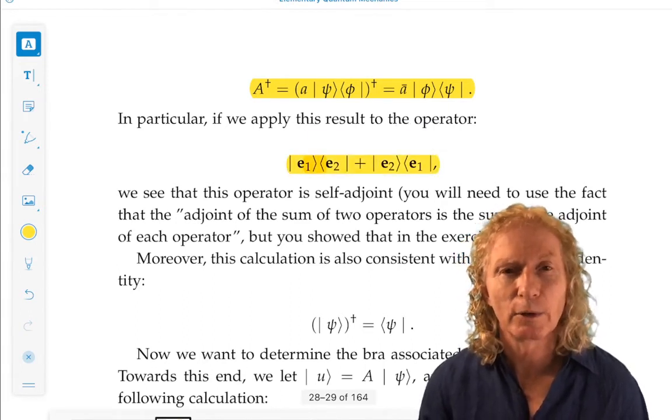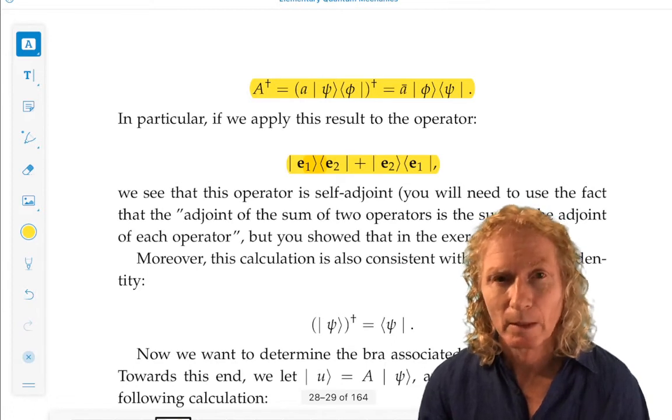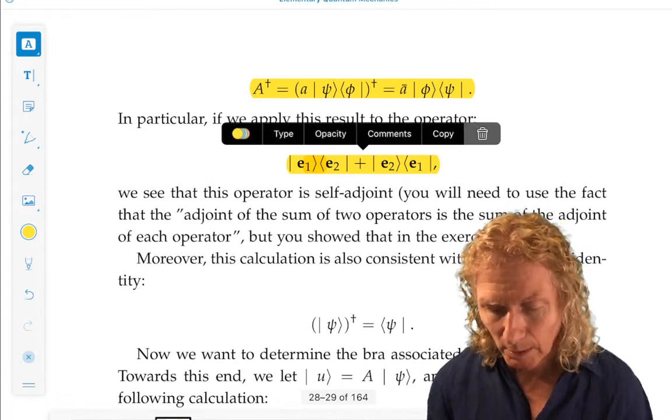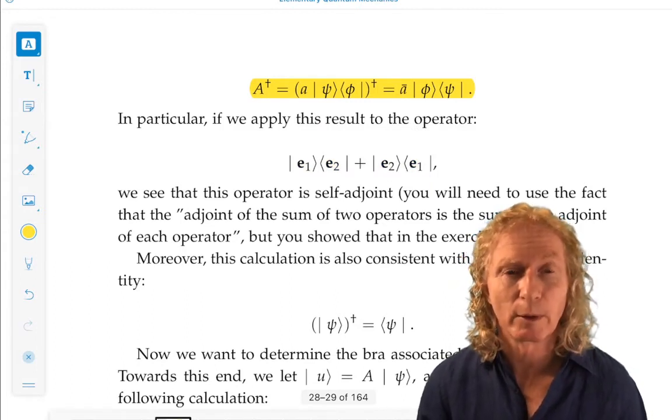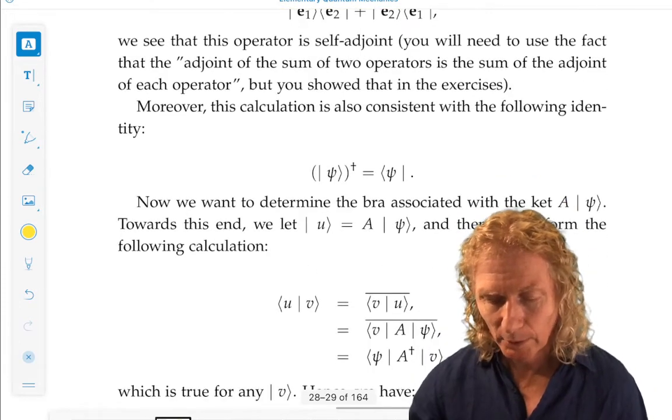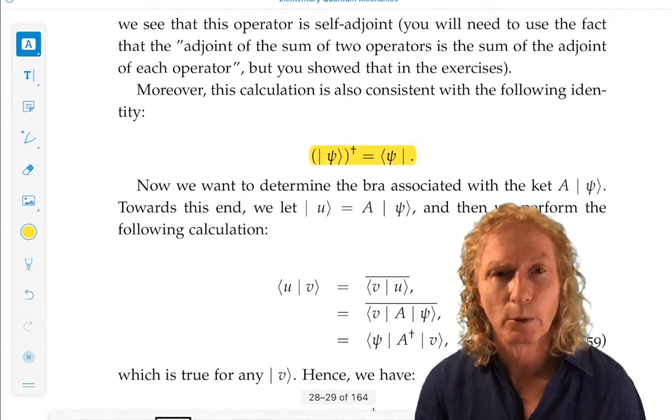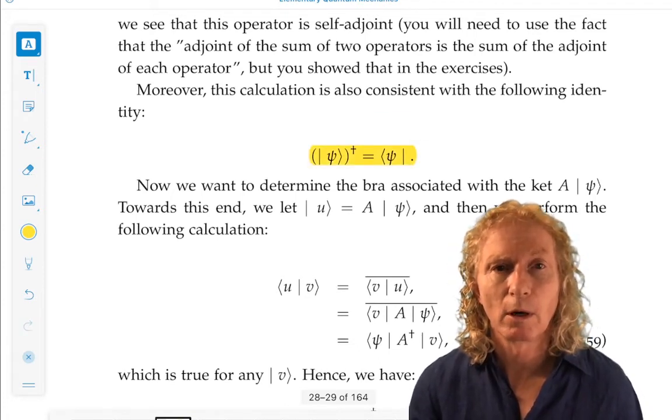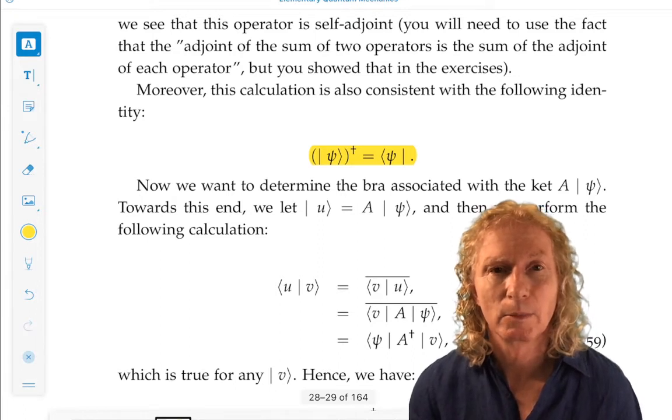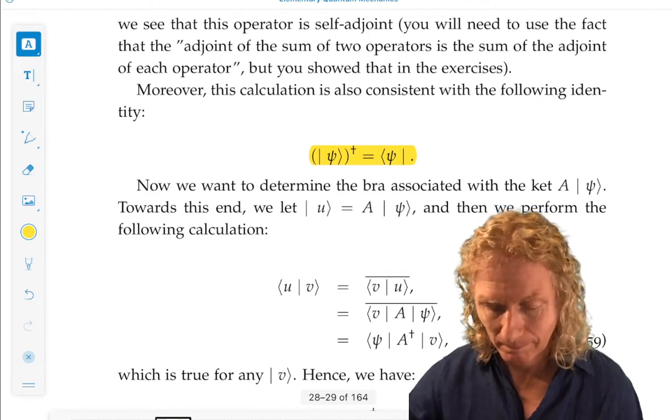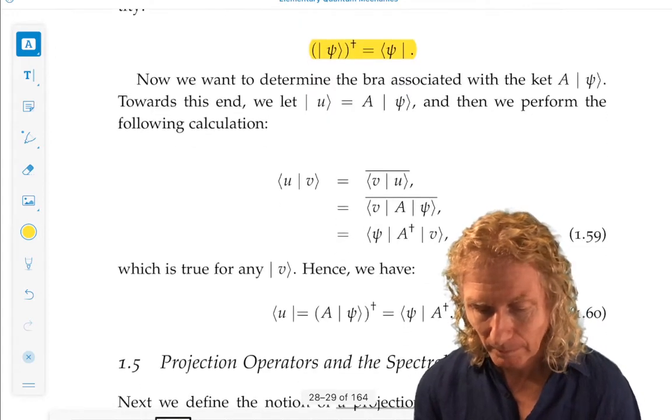Let's look at this operator here. This is clearly a self-adjoint operator. Why? Compute the adjoint. We just reversed the ones and the twos, effectively, or reverse Bras and Kets. We get exactly the same thing. So, this calculation is consistent with what I told you earlier, that the adjoint of a Bra is a Ket, or the adjoint of a Ket is a Bra.